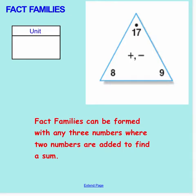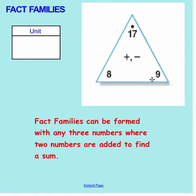Fact families. Fact families can be formed with any three numbers, where two numbers are added to find a sum. In this example, the two numbers that I am adding are 9 and 8. And when I add these two numbers together, I get a sum or total to an addition problem of 17. The sum is always written next to the dot at the top of the fact triangle.